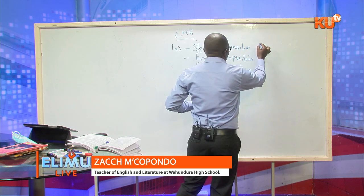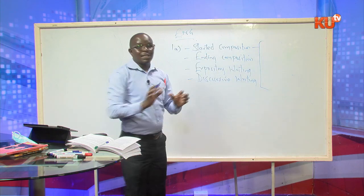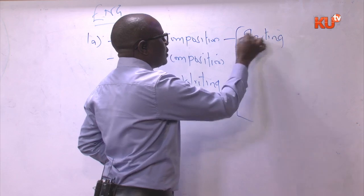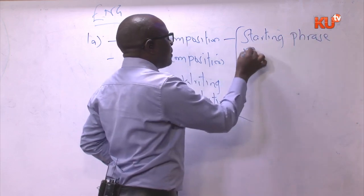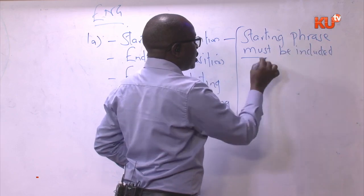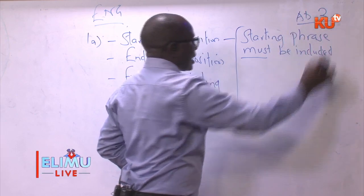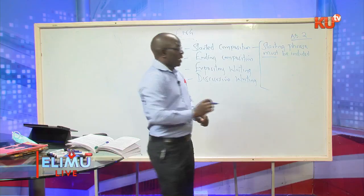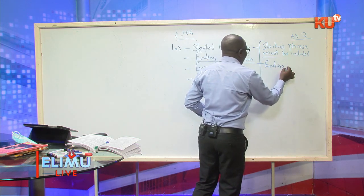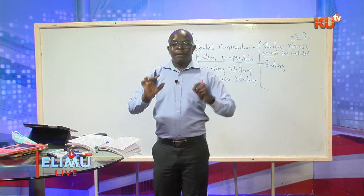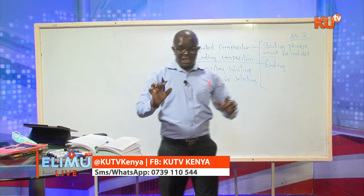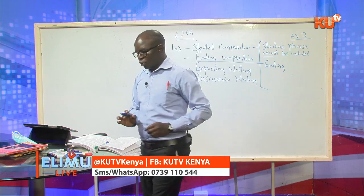When you're given a started composition, the phrase you've been given is called a rubric and that phrase must be present. The starting phrase must be included, failure to which you will lose an automatic deduction of up to two marks. If you're given an ending composition, the ending phrase must form the last sentence of your essay. Don't write anything after it. If given a started composition, don't write anything before it.